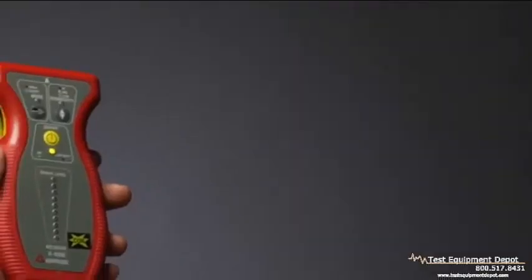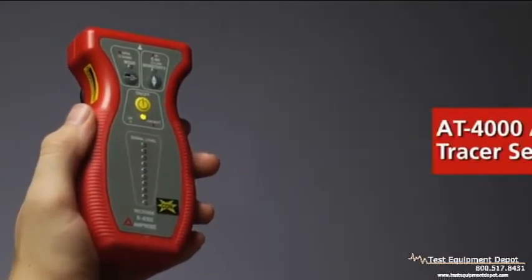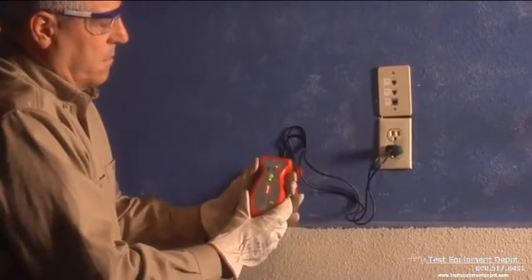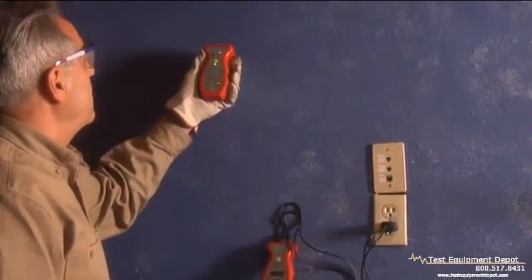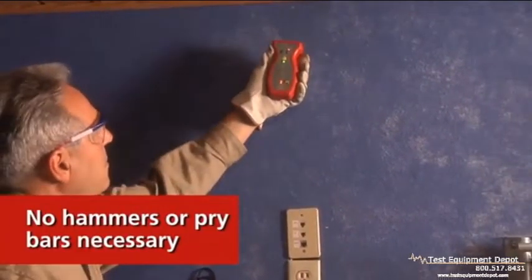That's why we make the AT4000 advanced wire tracer series. They can locate and trace cables and wires in floors, walls and conduit to pinpoint shorts, ground faults and broken wires. No hammers or pry bars necessary.